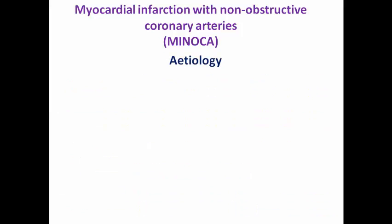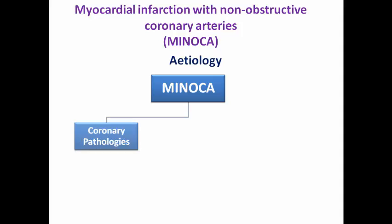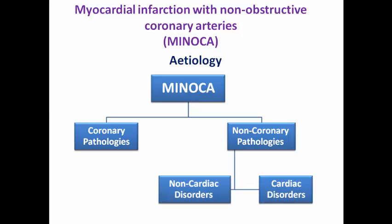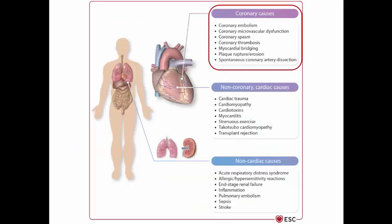There are variable etiologies for MINOCA, divided into coronary and non-coronary pathologies. Coronary causes include coronary embolism with distal embolization, coronary microvascular dysfunction, spasm, non-occlusive thrombus with stenosis less than 50%, myocardial bridging, plaque rupture or erosion, and spontaneous coronary artery dissection. In all these cases, coronary angiography shows stenosis less than 50%, yet a coronary pathology exists.